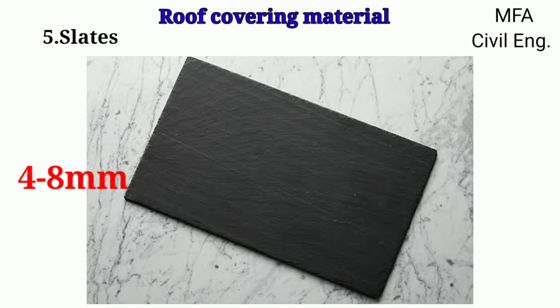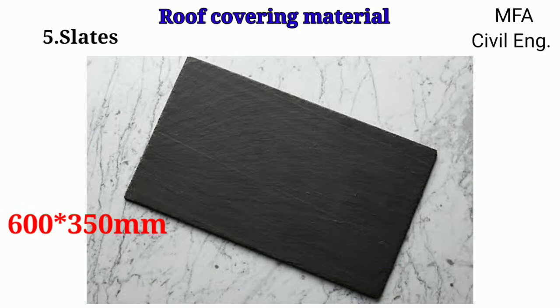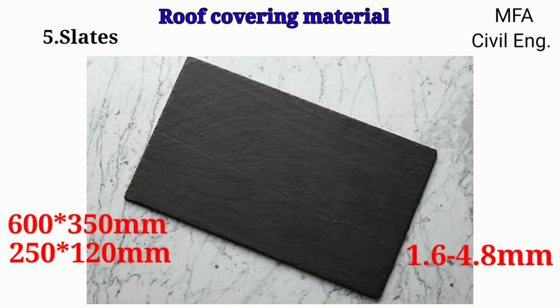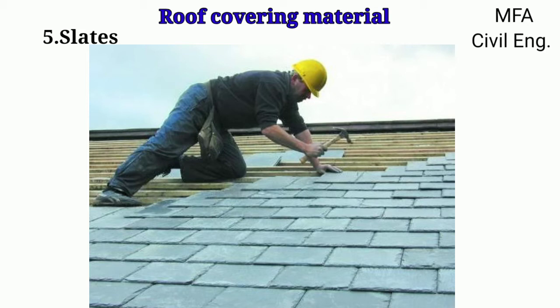The thickness of a slate varies from 4 mm to 8 mm and its size varies from 600 mm by 300 mm to 400 mm by 200 mm. The common size of slits varies from 600 mm by 350 mm to 250 mm by 120 mm, and the thickness of regular size slate stones varies from 1.6 mm to 4.8 mm. Slates are fixed on batons or boarding connected to timber rafters, and fixed through nails of zinc, copper or galvanized iron.